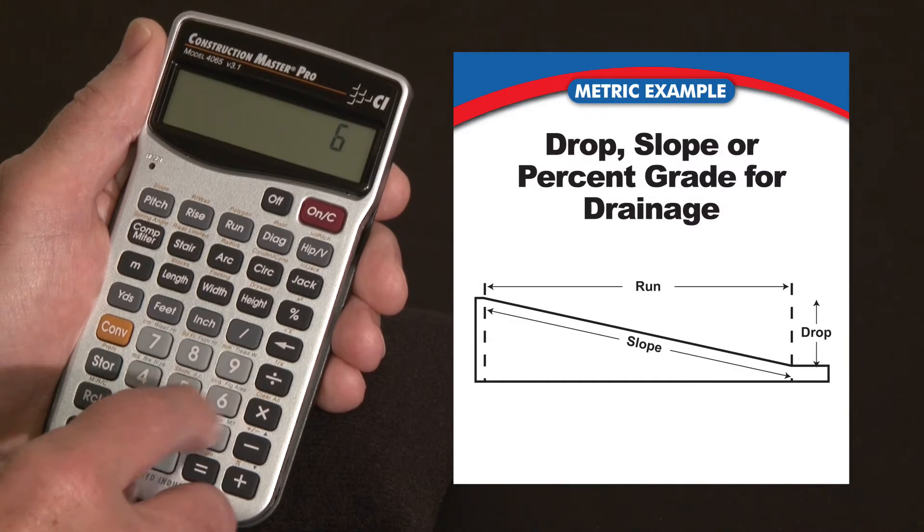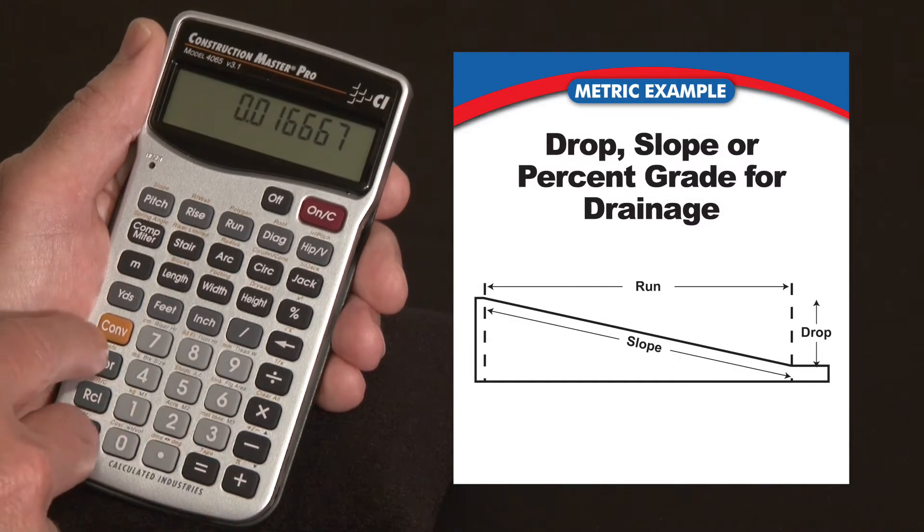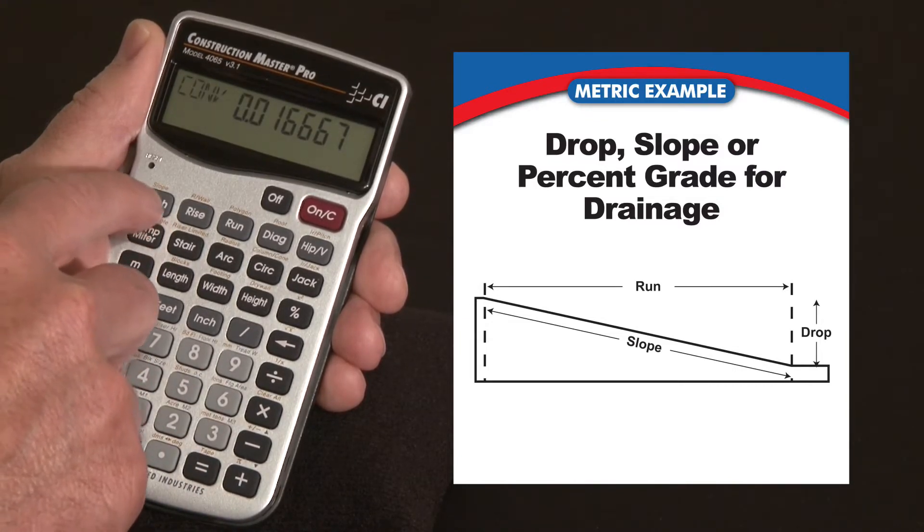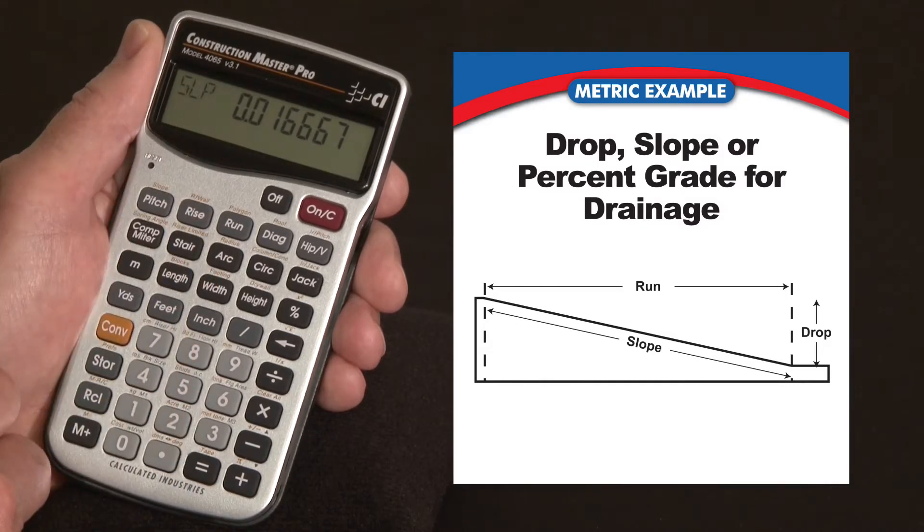We start with 1 divided by 60 equals, and I enter that. I hit convert pitch, and over the pitch key it says slope, so we've entered that as our slope.